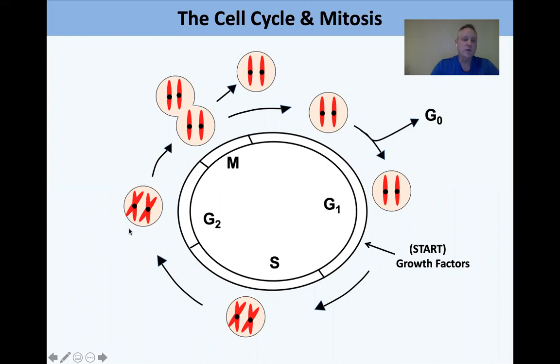Then you enter G2 phase, where you make sure that everything happened in S phase properly, because when you go into M phase, you don't want to segregate badly or incompletely replicated chromosomes into the daughter cells. In M phase, we generate a spindle and use anaphase to separate the chromatids from each other.